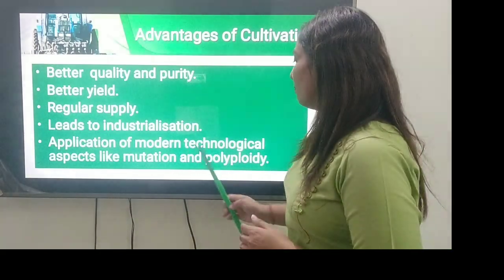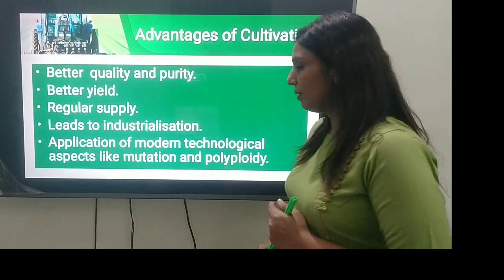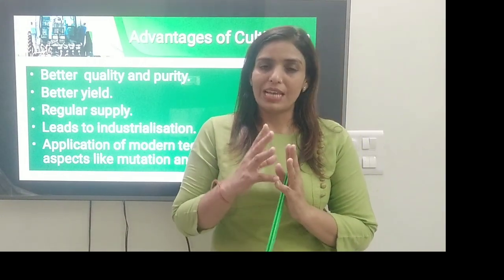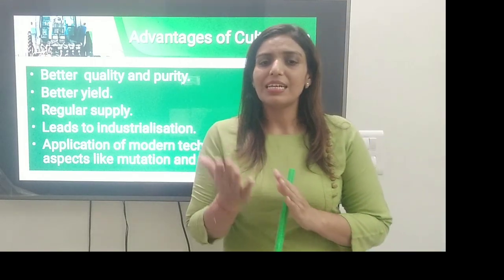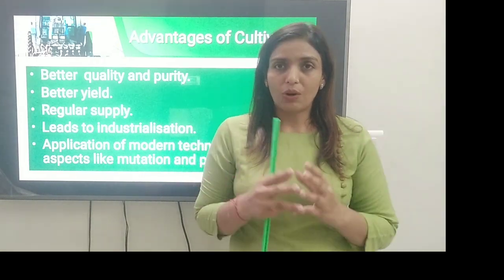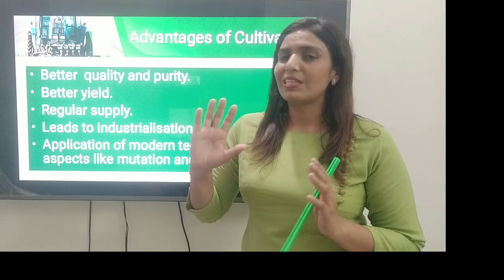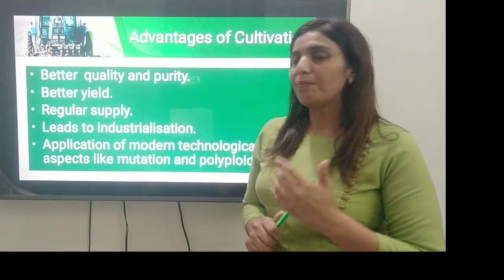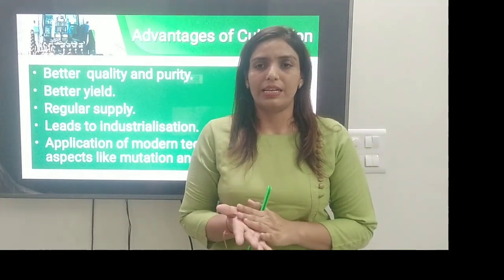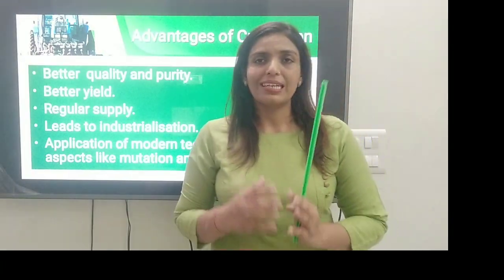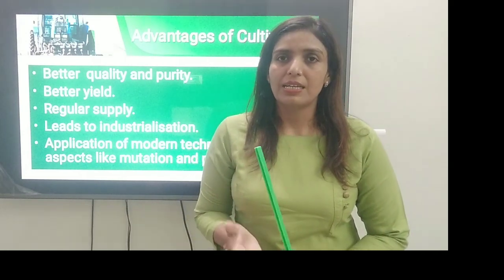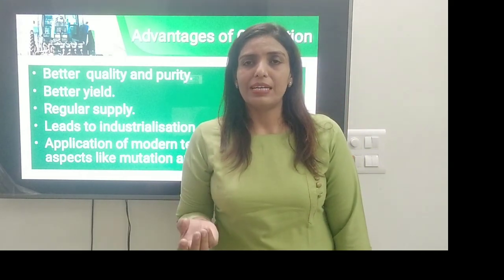Next क्या है — application of modern technological aspects like mutation and polyploidy. Mutation मतलब genetic changes होना, किसी भी way से genetic changes होना — cell में कोई change हो सकता है, due to change in the cell of the plant, or maybe due to a trigger जैसे बहुत ज़्यादा hot temperature, cold temperature, या किसी भी तरह की fluctuation — तो उस वजह से mutation के chances होते हैं और हम new variety grow कर सकते हैं. Next है polyploidy — polyploidy का मतलब है it contains more than two sets of chromosomes. For example: apple, peanut, bananas — banana triploidy के अंदर आता है.